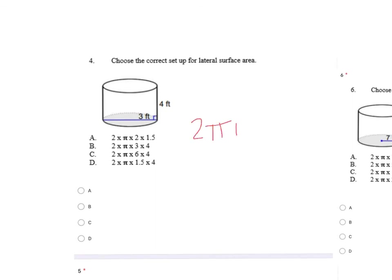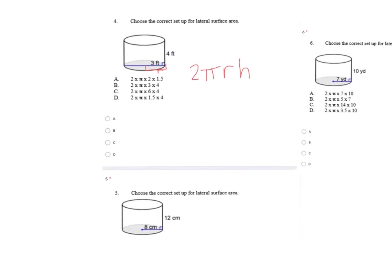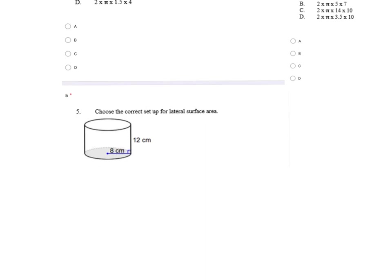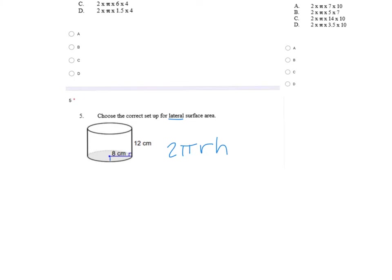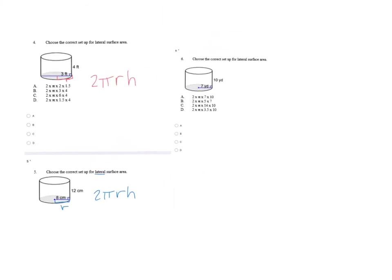Number four — same thing. The formula is two times pi times radius times height. Pay close attention to your circular base and the line they've drawn. Is the line all the way across? If so, that's your diameter — and we just want half of that. So half of three is your radius. Number five — same thing, lateral: two times pi times radius times height. This one's pretty self-explanatory — they drew halfway across the circle, so you're good to go.